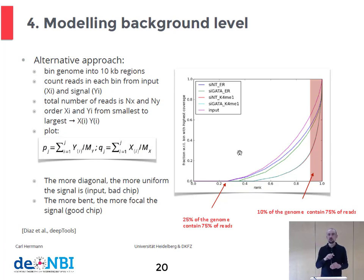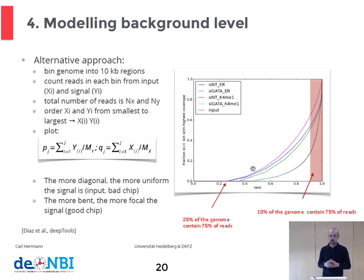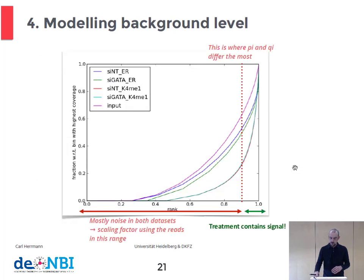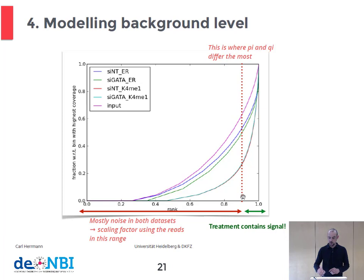Sometimes we see experiments where the treatment follows exactly the same curve as the input, meaning we have very low enrichment in the data set, indicating the immunoprecipitation has failed. The shape of these curves depends on the type of ChIP-seq data: sharp peaks from transcription factors have a very bent behavior, while broad histone modifications like H3K27 trimethylation have a slower increase. Using these fingerprints, we can estimate the scaling factor between the input and the signal by selecting the point of strongest difference between input and treatment and looking at the ratio of these two points.